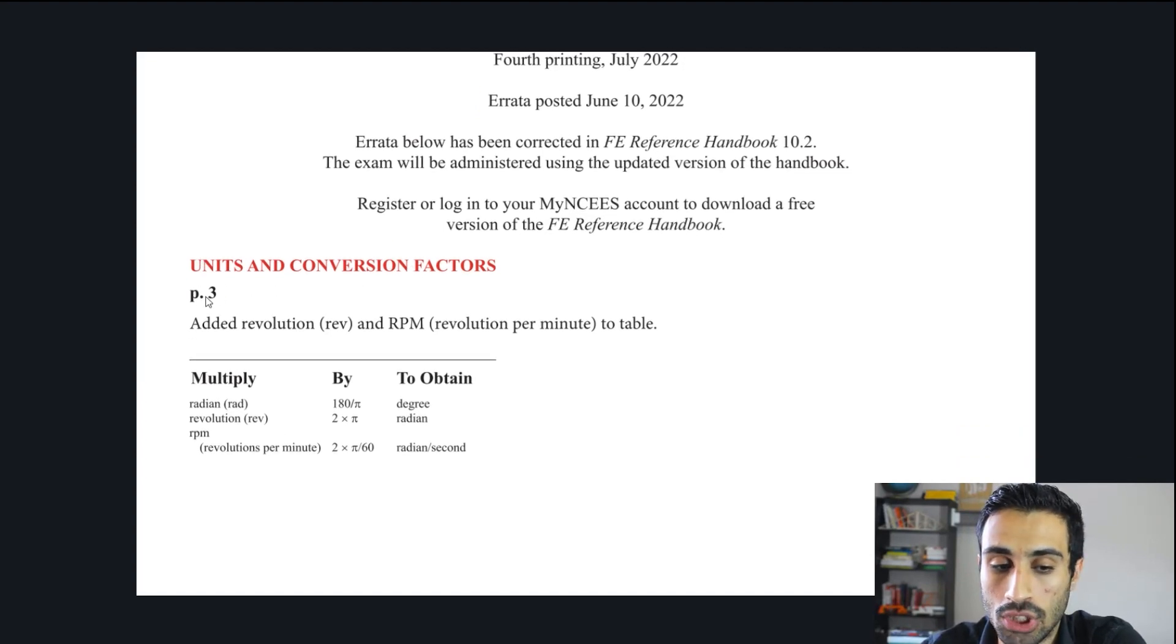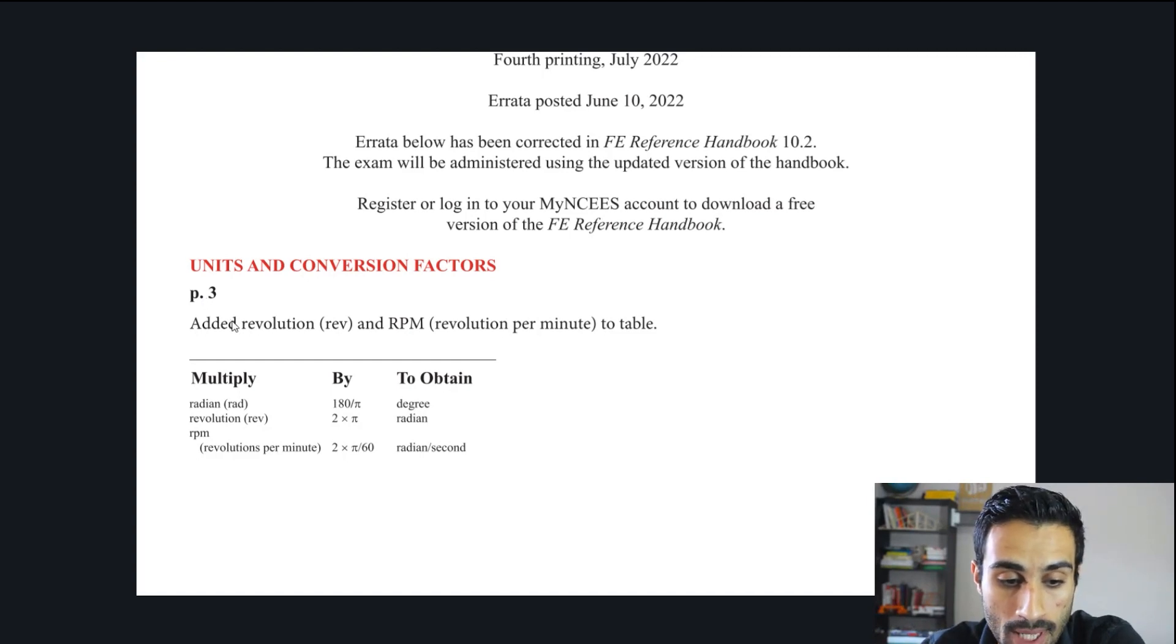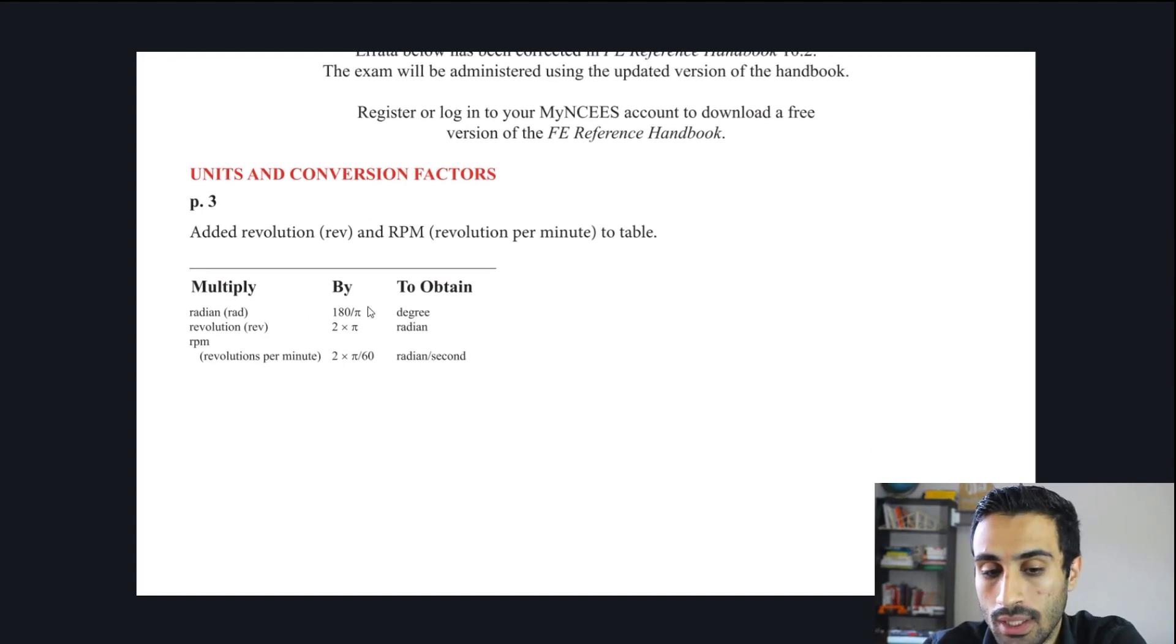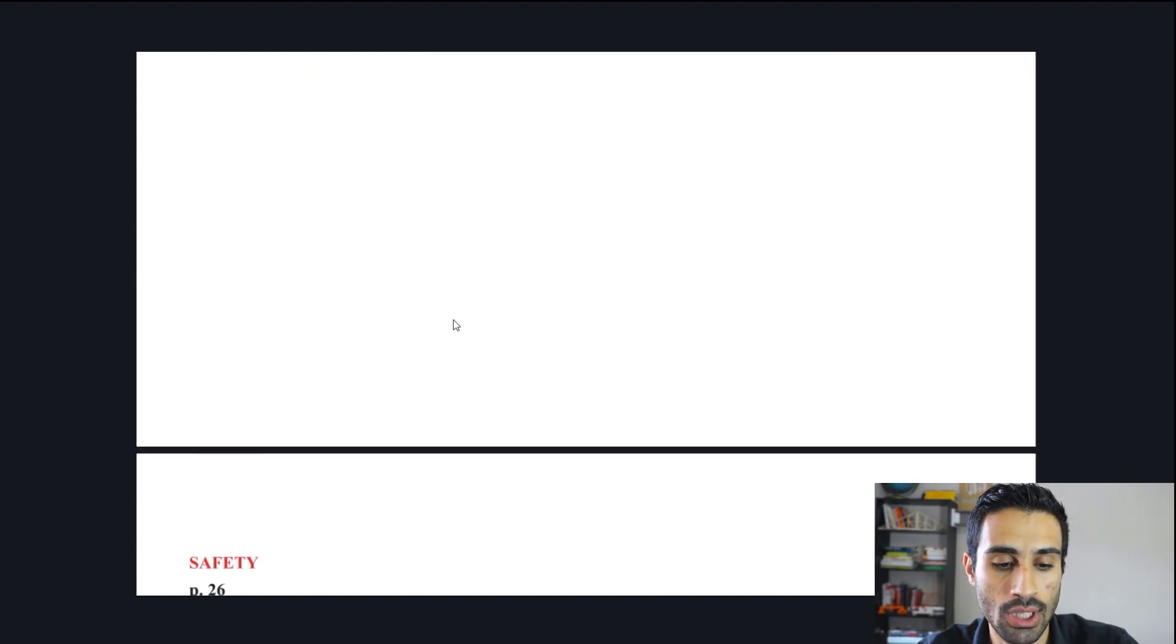First of all, we're looking at page 3. They just added the conversion where we go from, in this case, we had the radian to degree already there, but they added the one from revolution to RPM to the table. When we're going from left to right to get revolution to the RPM, we can apply these conversions under page 3 unit conversion factors table. I'll also attach a video showing how to use this table that I released in the past.